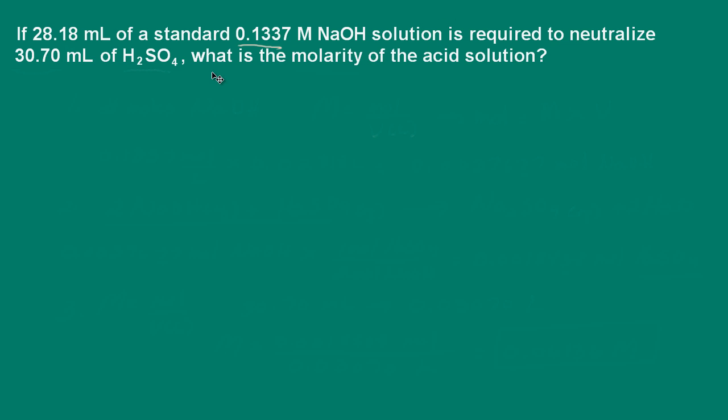In this problem, we're told that it takes 28.18 milliliters of 0.1337 molar sodium hydroxide to neutralize 30.7 milliliters of a sulfuric acid solution. They're asking, what is the molarity of the acid solution? The first thing we need to do is find out the number of moles of sodium hydroxide it took to react with this acid.